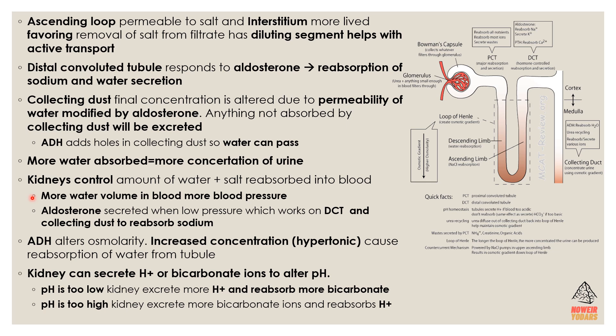Kidneys control the amount of water and salt absorbed — more water means more blood volume, which means more blood pressure. Aldosterone is only secreted when there is low pressure. It acts on the DCT and collecting duct to reabsorb sodium. Aldosterone gets activated when there is low pressure to reabsorb sodium via the DCT and collecting duct.